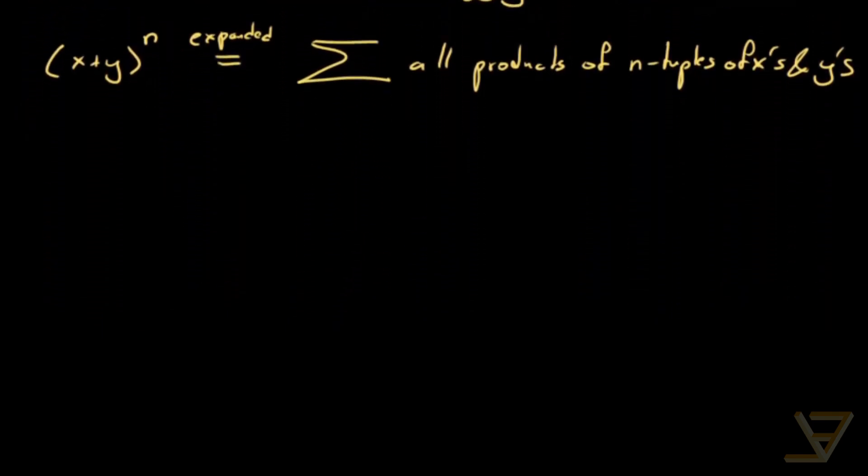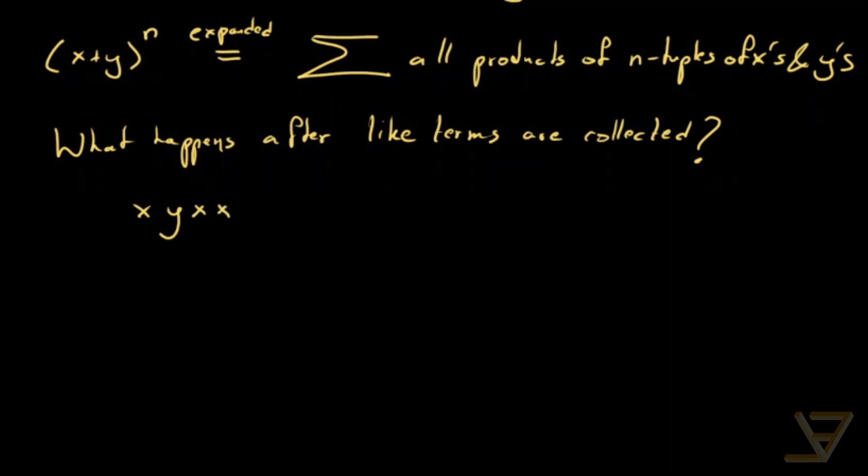So now the question is, what happens after like terms are collected? And the answer is this. Let's say we have x, y, x, x. And we have x, x, y, x. The point is that they collapse into the same term, which is x cubed y. So we're going to be collapsing a lot of terms into each other and getting a coefficient.